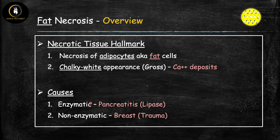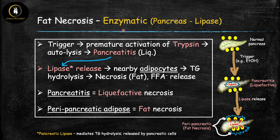Fat necrosis has two different causes: one mediated by enzymes and the other by trauma. Mechanism one is enzymatic — mediated specifically by pancreatic lipase — and this occurs as a consequence of pancreatitis. The pancreas is an important digestive organ containing very potent digestive enzymes. It protects itself from autodigestion by keeping these enzymes in their inactive form, known as zymogens, and they only become activated once they enter the lumen of the small intestine. In pancreatitis, a trigger — most commonly ethanol consumption or gallstones in the US — leads to damage of pancreatic cells.